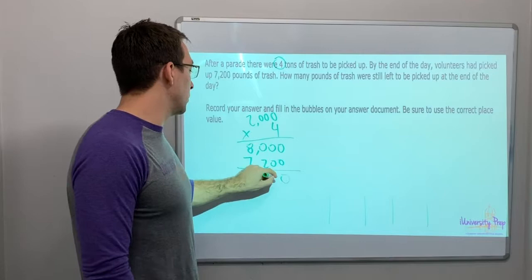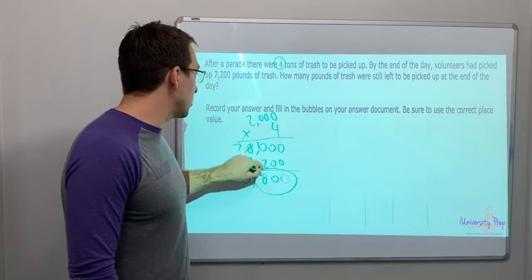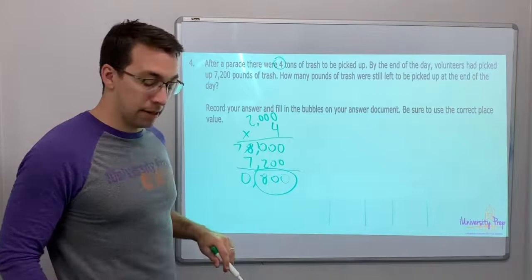Zero, zero, can't do it. Seven, that's a zero. Ten minus two is eight. So eight hundred pounds is left, remains to be picked up. Still left to be picked up. Eight hundred pounds.